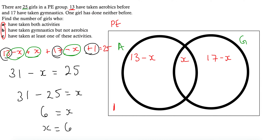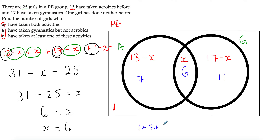Collecting numbers and letters: 13 plus 17 plus 1 gives 31, and the X terms simplify to negative X. Rearranging: 31 minus 25 equals X, so X equals 6. The intersection is 6. That means the aerobics-only region is 13 minus 6 equals 7, and gymnastics-only is 17 minus 6 equals 11. Checking: 1 plus 7 plus 6 plus 11 equals 25. Correct.